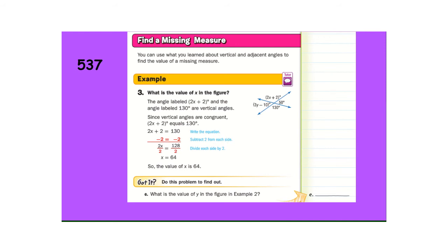Now, letter E says, what is the value of Y? So, you do the same thing there. Pause the video while you're figuring that one out. Write it down. Show your work. So, 3Y minus 10 should equal 50. Add 10 to both sides. So, 3Y equals 60. Divide by 3. Y equals 20. The angle is 50 degrees, but Y equals 20. It was asking you for Y.